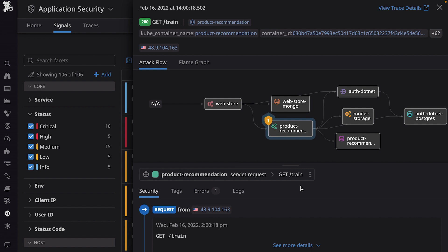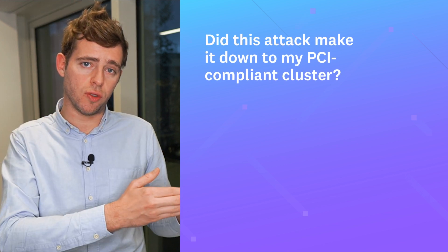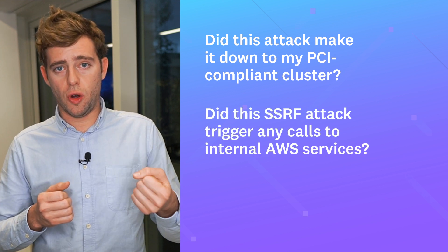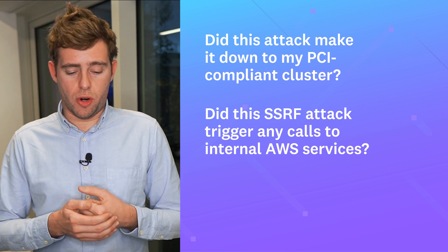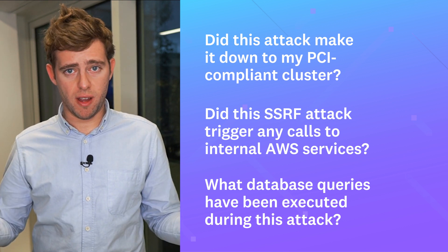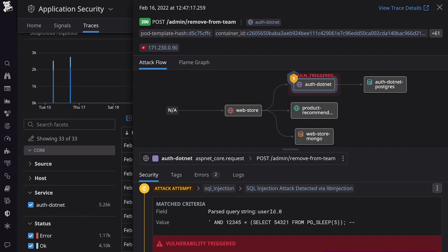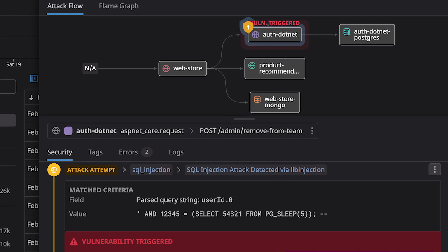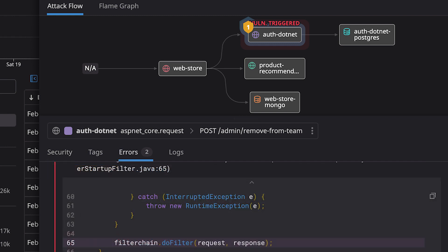This means teams can now answer questions they couldn't answer before — like, did this attack actually make it down to my PCI compliance cluster? Did this SSRF attack actually trigger any calls to internal AWS services? Or what were the database queries performed during this attack? The observability context also allows you to automatically classify attacks and determine whether they actually reached a code-level vulnerability. The deep integration with error tracking helps teams get stack traces or even source code to remediate quickly.